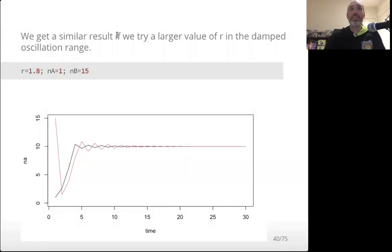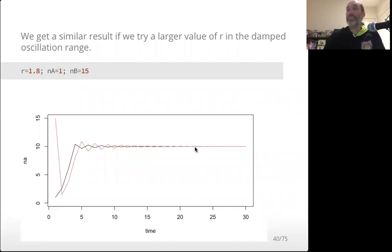If we increase the value of r into the damped oscillation range, we see something similar. We started higher and jumped down. In some ways they get closer to the carrying capacity and closer to each other pretty quickly. It may take longer for them to truly become the same, but there's still this same behavior of convergence.